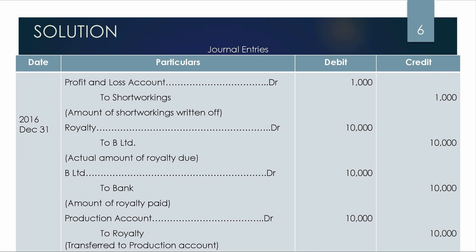Next year is 2016. In 2016, we have 1,000 units. Royalty is Rs.10 per unit, so we have Rs.10,000 royalty. The minimum rent is also Rs.10,000. Since minimum rent equals royalty amount, we have a direct entry — royalty to B Limited. There is no short working in this case.